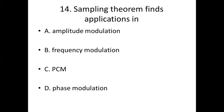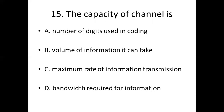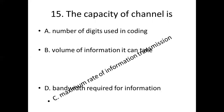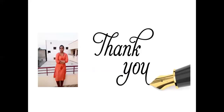15th bit. The capacity of a channel is: Option A, number of bits using coding. Option B, volume of information it can take. Option C, maximum rate of information transmission. Option D, bandwidth requirement for information. Answer: Option C, maximum rate of information transmission.